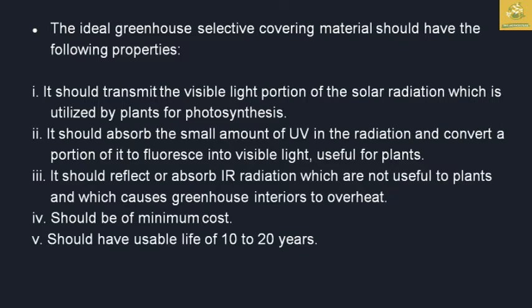The ideal greenhouse covering material should transmit the visible light portion of solar radiation for use in photosynthesis, block harmful ultraviolet radiation, and absorb a small amount of UV radiation converting it via fluorescence into visible light usable by plants. It should also absorb and reflect higher infrared radiation, which is not useful to plants but causes greenhouse interiors to overheat. The cost of the covering material should be minimum and affordable, with a life expectancy of 10 to 20 years, though very few materials currently achieve this maximum lifetime.